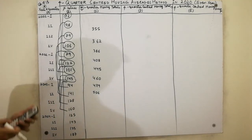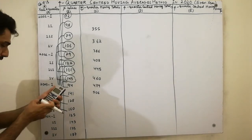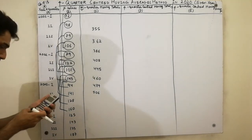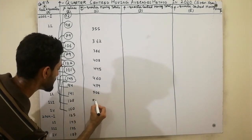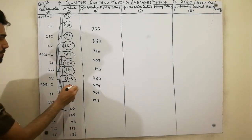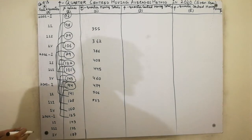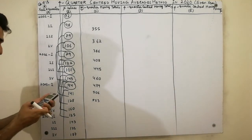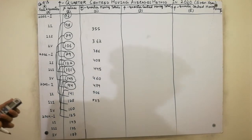We leave that value and add the next four values: 94 plus 141 plus 128 plus 160. We get the value 523, written in the center. Then the next four values: 141 plus 128 plus 160 plus 125. We get the value 554, written in the center.